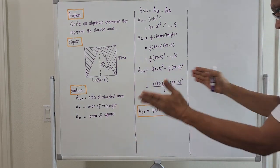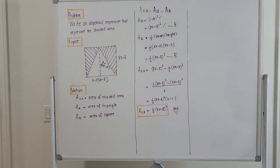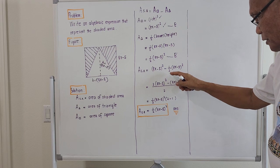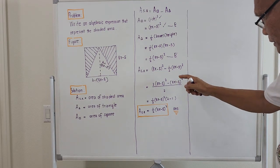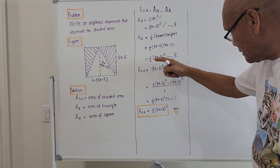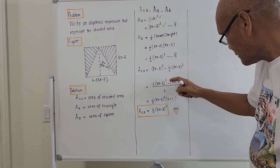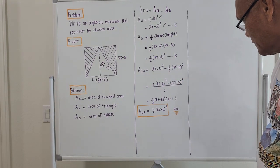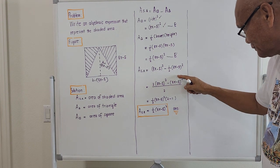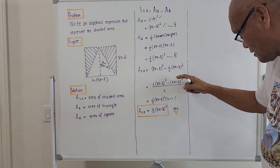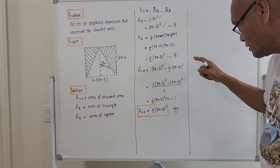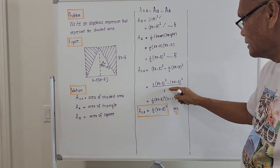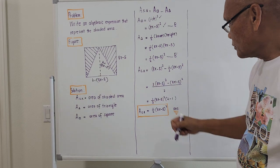It's just a matter of algebraic manipulation. Since there is a denominator of 2, I will multiply to get a common denominator: 2 times (8x − 5)² minus 1 times (8x − 5)², all over the common denominator 2.